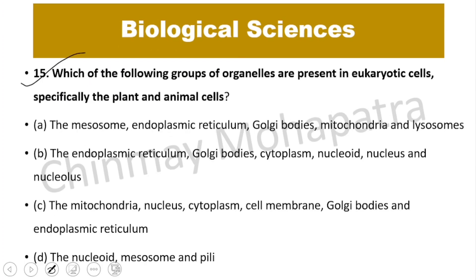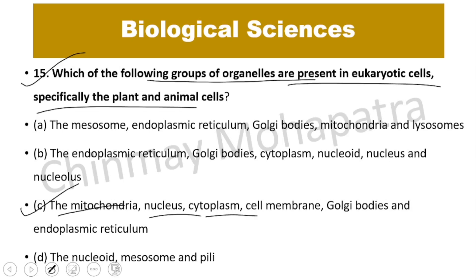Question number 15: Which group of organelles is present in eukaryotic plant and animal cells? The right answer is option C: mitochondria, nucleus, cytoplasm, cell membrane, Golgi body, and endoplasmic reticulum.